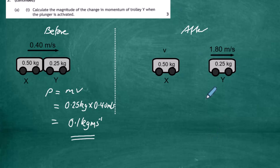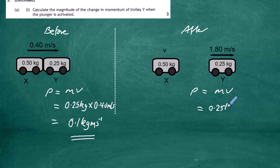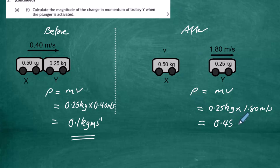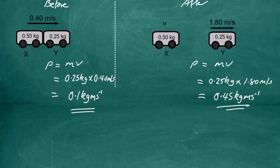After the plunger is activated, we calculate the momentum of trolley Y. It is still moving to the right so we have a positive velocity — remember momentum is a vector. The mass remains 0.25 kilograms, and we multiply by the new speed of 1.80 meters per second, giving a momentum of 0.45 kilogram meters per second.